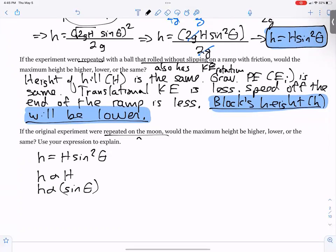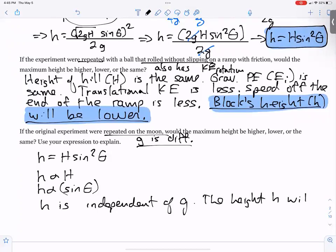On the moon, g is different, but you can see h is not proportional to g. Height is independent of g. Therefore, the height h will be the same.